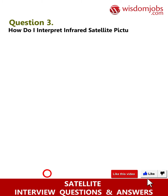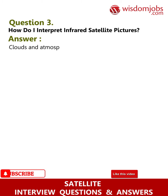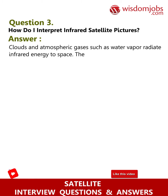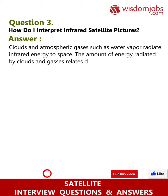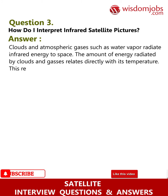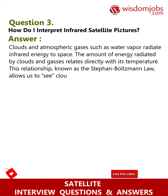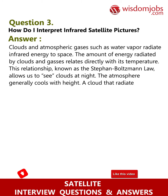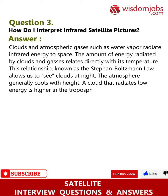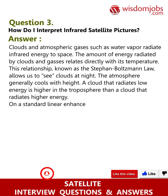Question 3: How do I interpret infrared satellite pictures? Answer: Clouds and atmospheric gases such as water vapor radiate infrared energy to space. The amount of energy radiated by clouds and gases relates directly to their temperature. This relationship, known as the Stefan-Boltzmann law, allows us to see clouds at night. The atmosphere generally cools with height; a cloud that radiates low energy is higher in the troposphere than a cloud that radiates higher energy.